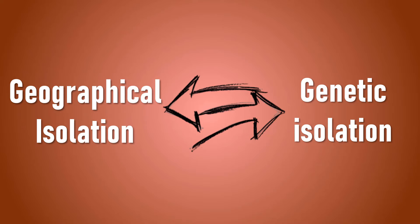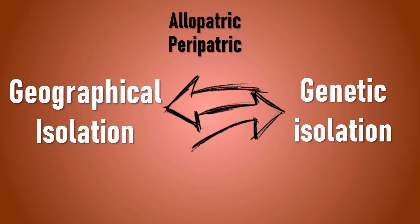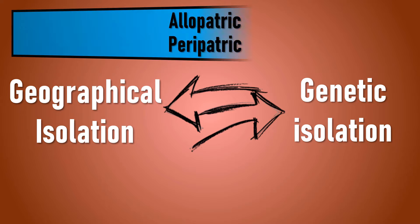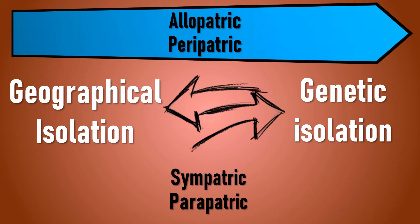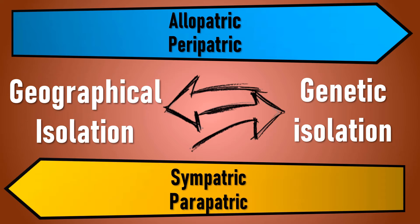In allopatric and peripatric speciation, geographical isolation leads to genetic isolation. However, in sympatric and parapatric speciation, genetic isolation leads to geographical isolation — this is also due to ecological isolation, as genetic differences change the ecological behavior of the organism. We must also note that peripatric and parapatric speciation both occur in a small niche.